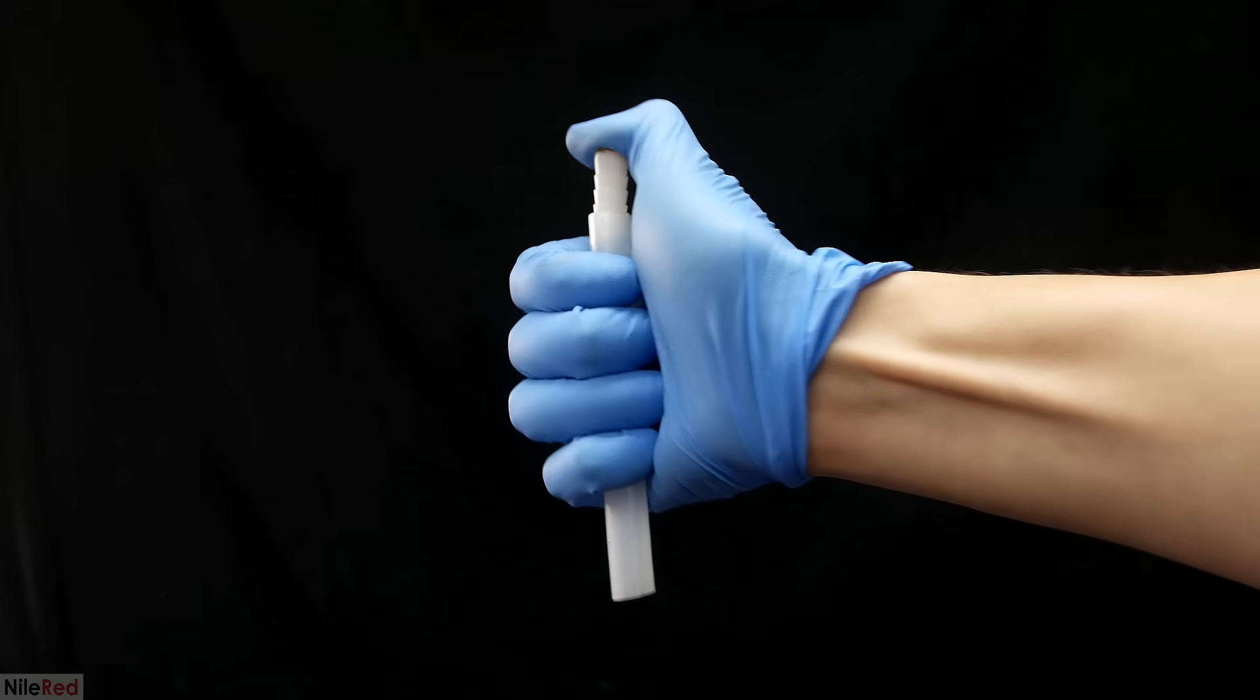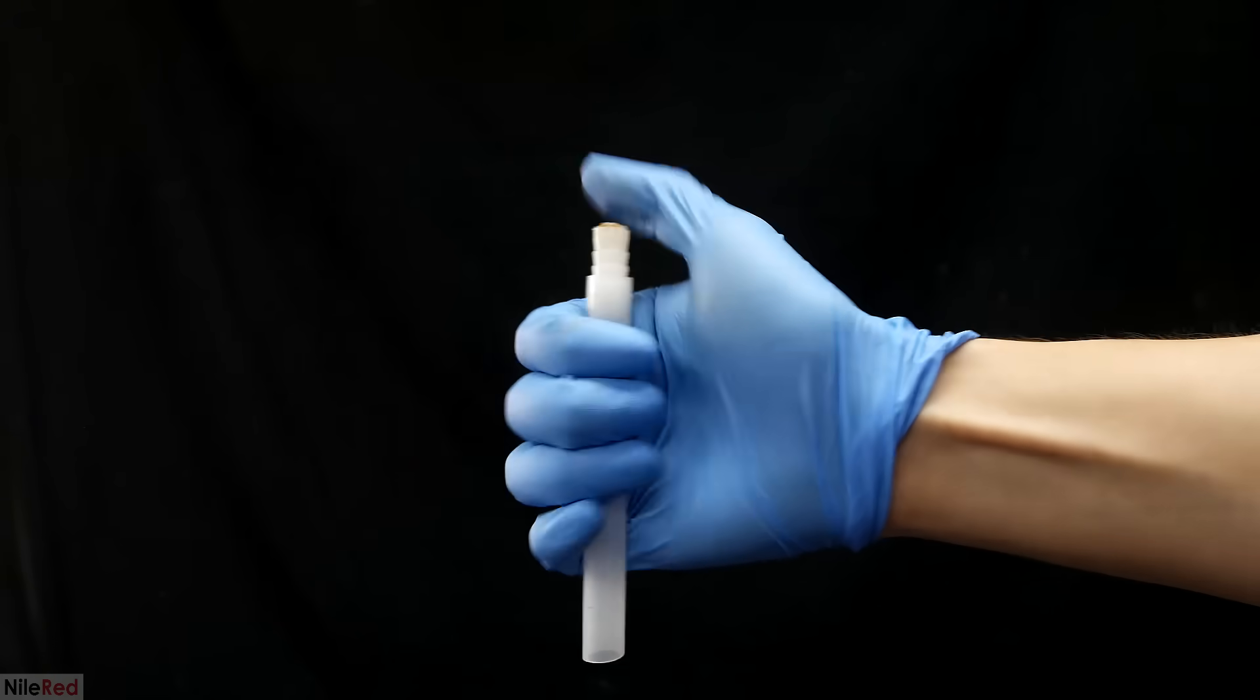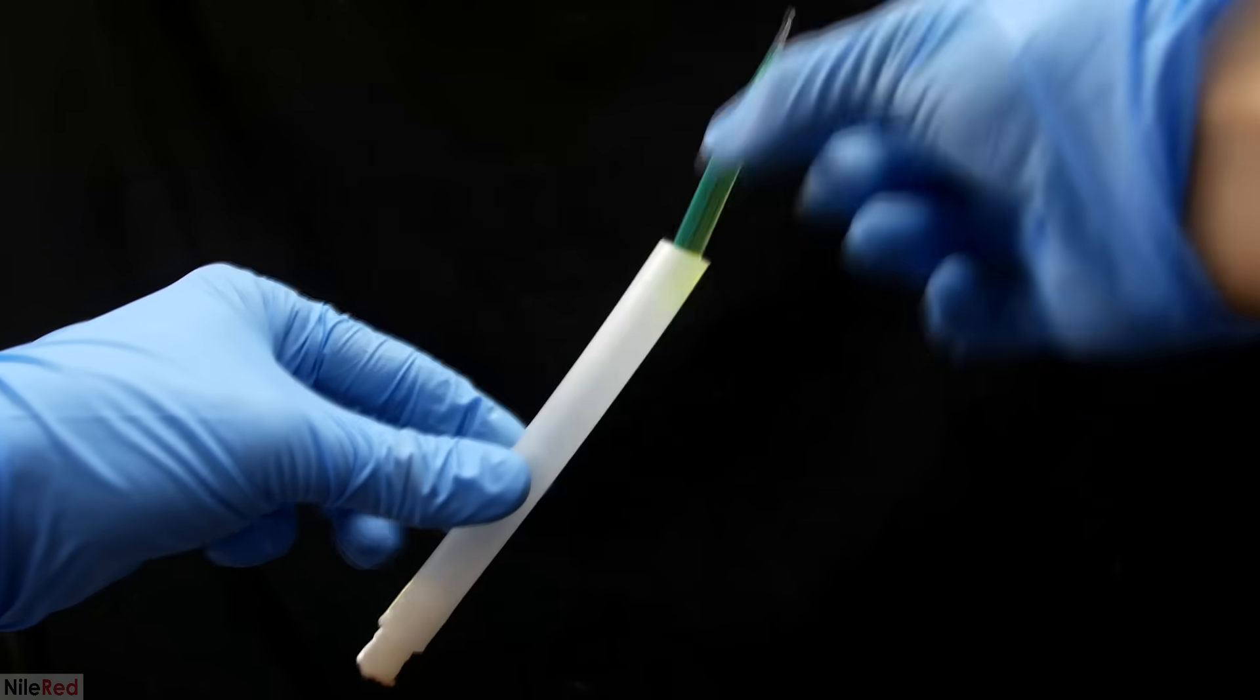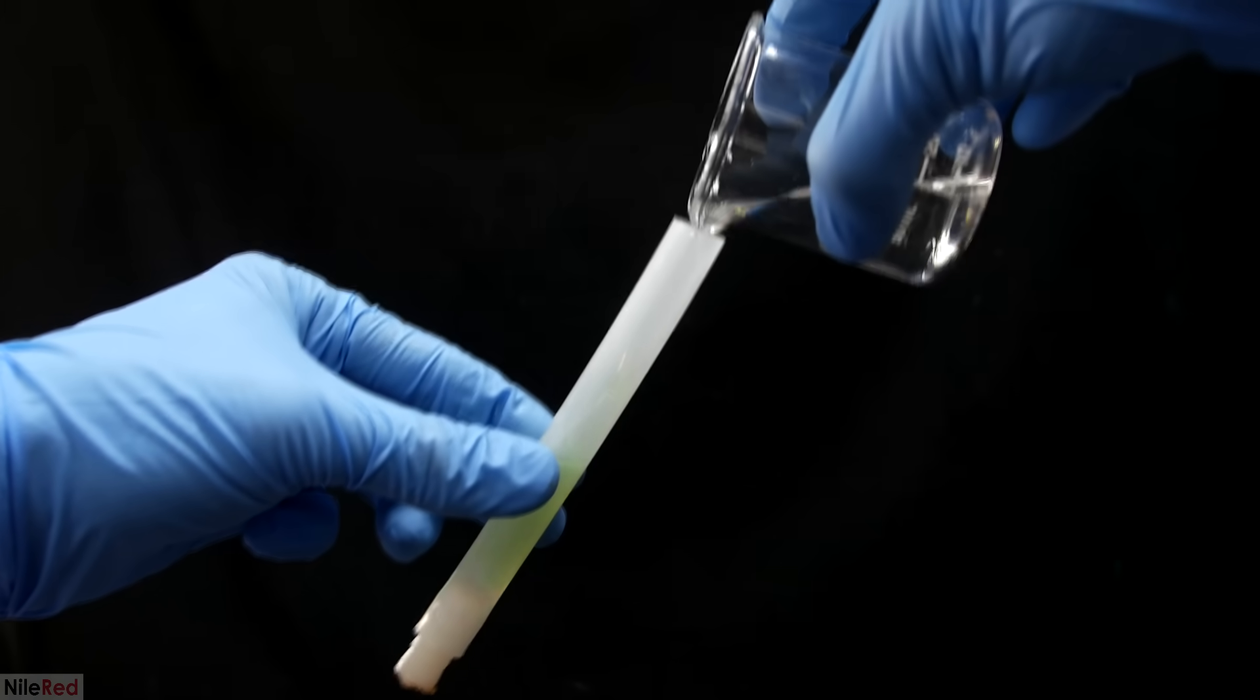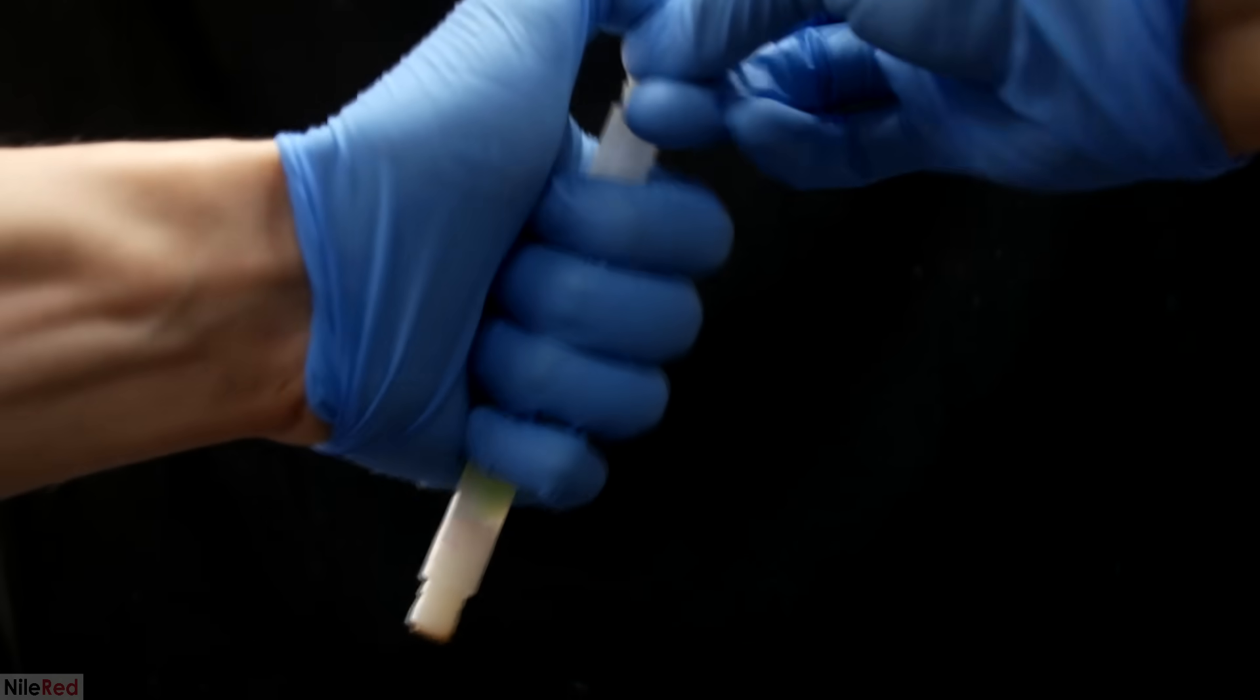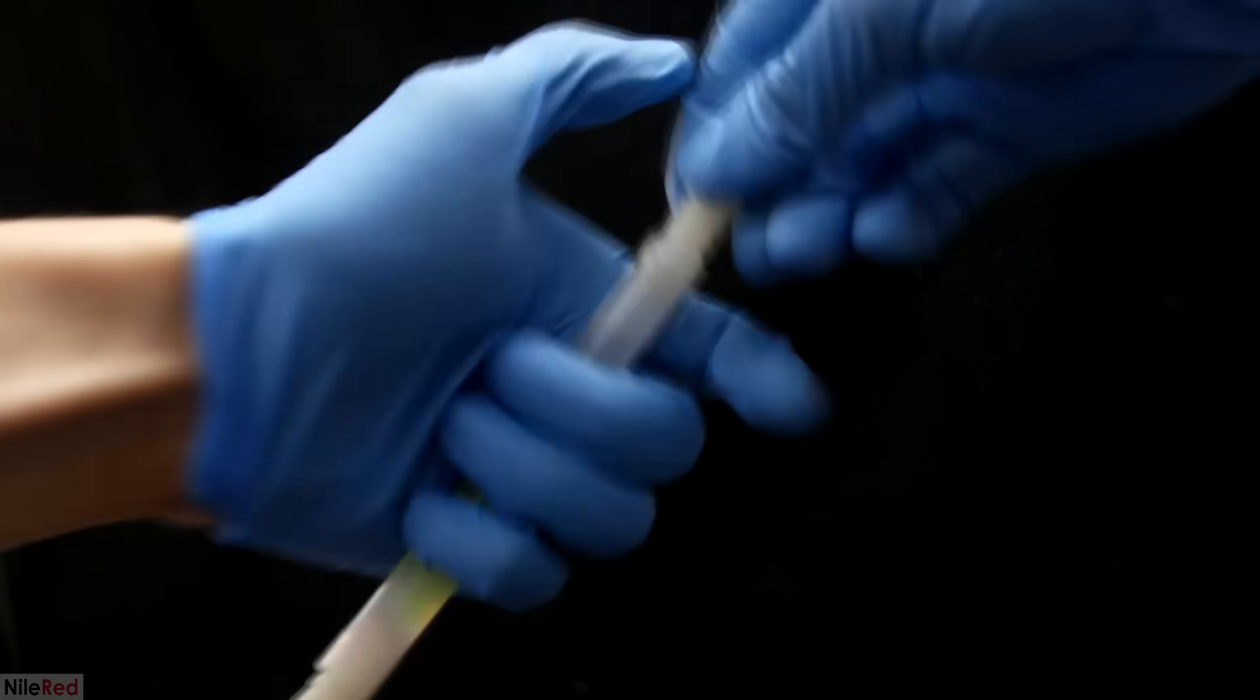I cut out a small section of polyethylene tubing, and then I plugged one end. I dropped in the ampoule, topped it off with peroxide, sealed the other end, and my terrible glow stick is now complete.